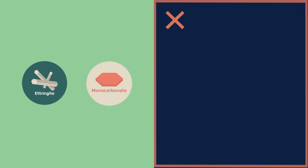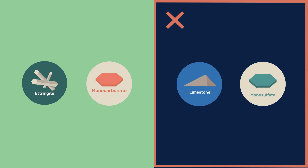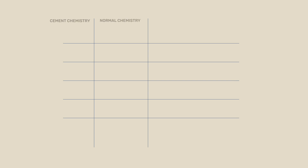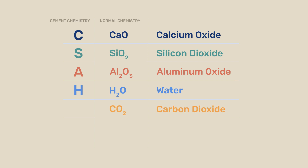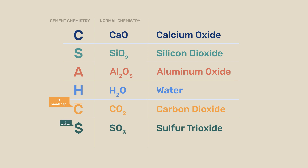Overall, we can look at the implication of ending up with monocarbonate and ettringite instead of monosulphate and limestone. For this, let us first recall and expand the cement chemistry notation. We previously saw that C, S, A, and H respectively represent calcium oxide, silicon dioxide, aluminum oxide, and water. For CO2, we will use the traditional notation C-superscript, which is easier to display than C small cap, most often used nowadays for typographical convenience. For SO3, we will use the dollar sign, which is more convenient than the traditional S-superscript or the increasingly used S small cap.